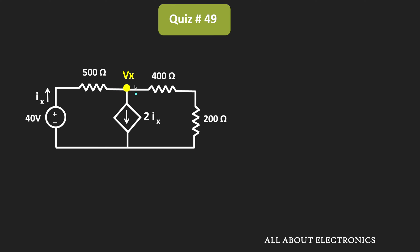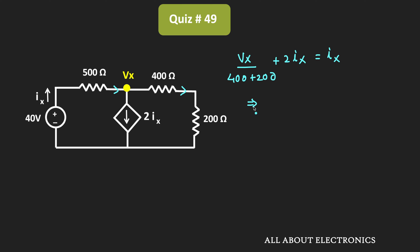So if we apply KCL at this node, then we can say that Vx divided by (400 + 200) Ohm, that is this current, plus 2Ix, that is this current, is equal to Ix, the incoming current. From this we can say that Ix is equal to minus Vx divided by 600 Ohm. Let's call this Equation 1.